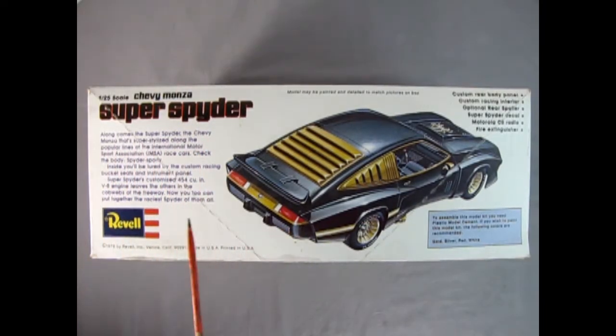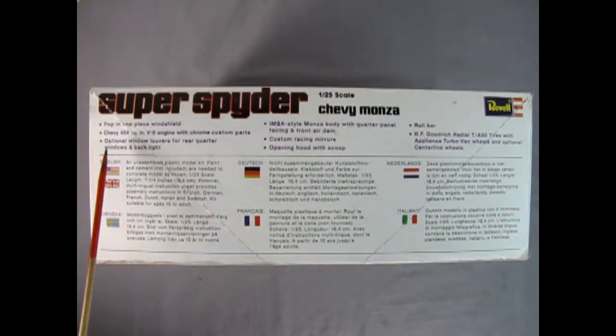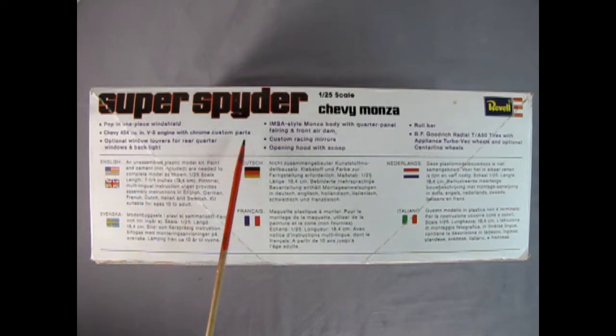Our Super Spider includes custom rear body panel, custom racing interior, optional rear spoiler, Motorola CB radio, and a fire extinguisher. The model also includes a pop-in one-piece windshield, Chevy 454 cubic inch V8 engine with chrome custom parts, and optional window louvers.